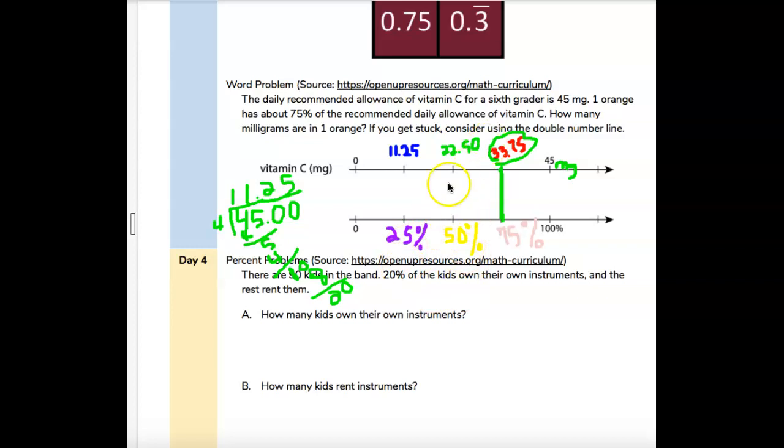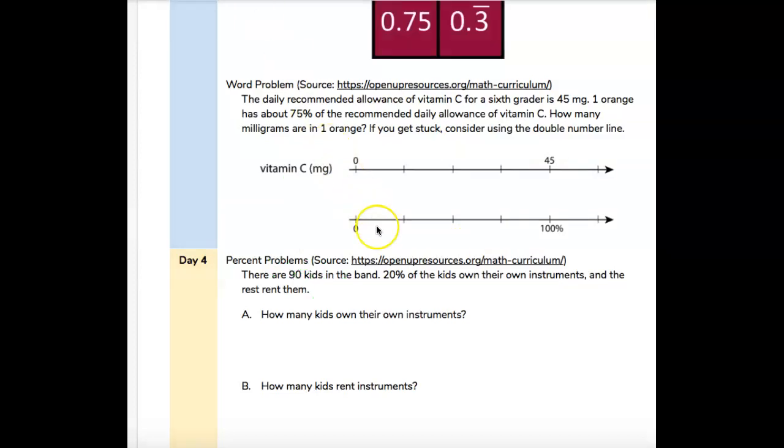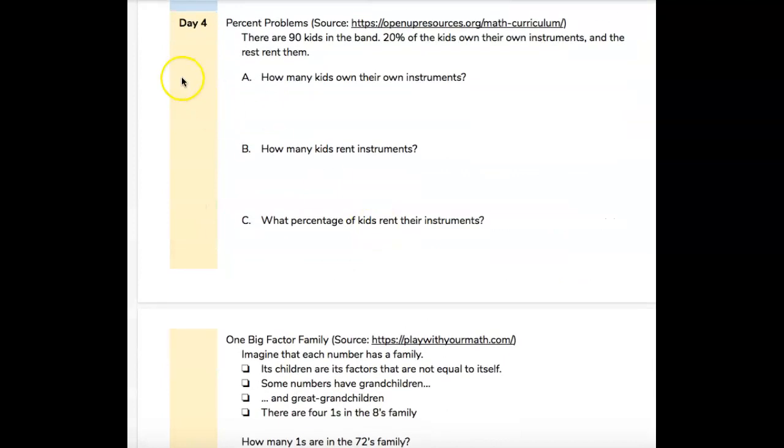All right, so that was day three. Let's move on to day four because we have four, five, and one to do today, week two, one. I'm going to move our paper up. So day four, percent problems. There are 90 kids in the band. And 20% of the kids own their own instruments, and the rest rent them. So how many kids own their own instruments?